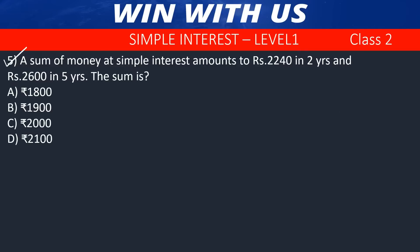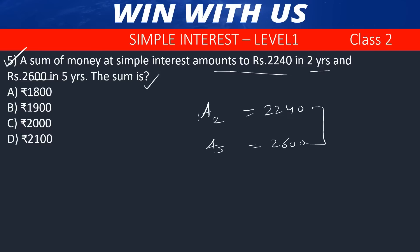Question number 5. A sum of money at simple interest amounts to 2,240 in 2 years and 2,600 in 5 years. The difference between 2,600 and 2,240 is 360 rupees over a difference of 3 years. The interest for 3 years is 360, so 1-year interest is 120 rupees.